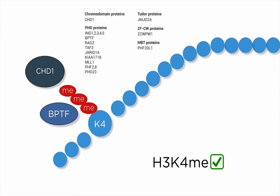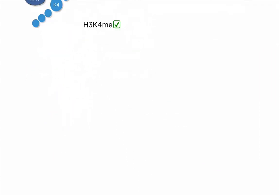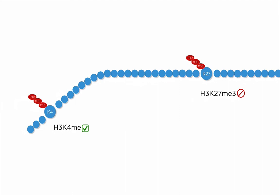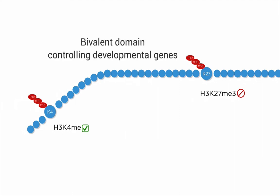While H3K4 trimethylation is almost exclusively activating transcription, the mark can occupy the same promoter as the repressive H3K27 trimethyl mark. Those so-called bivalent domains are often found at important developmental genes. Those domains are still under intensive investigation, but it is believed that genes controlled by bivalent domains are inactive while ready to be transcribed at any time. This mechanism appears to be crucial in the exact timing of development.